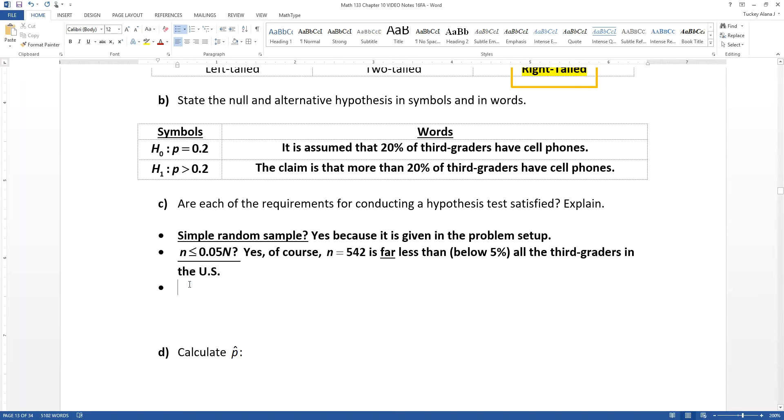So 542 is a safe bet as being less than five percent of all of that. Now if you're given the population size, you can actually do this calculation, but if you're not, then you're kind of pretending like you're a magician and just saying ta-da.